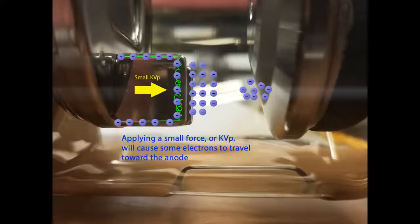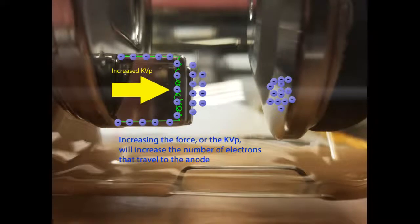Applying a small force, or KVP, will cause some electrons to travel towards the anode. Increasing the force, or the KVP, will increase the number of electrons that travel to the anode.